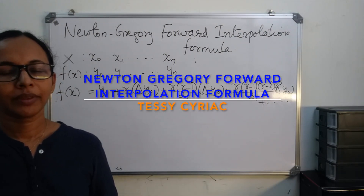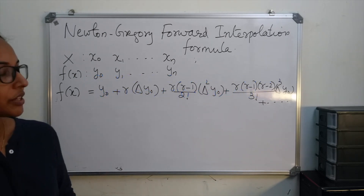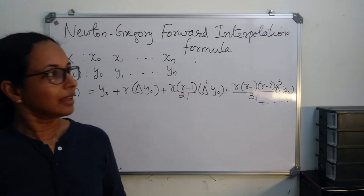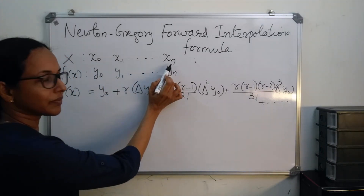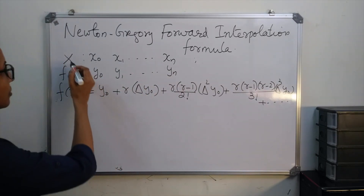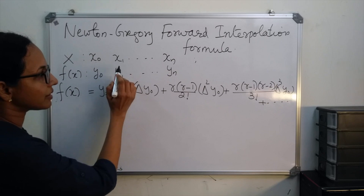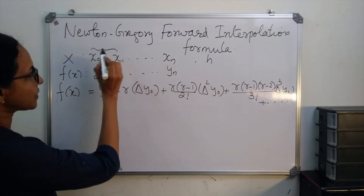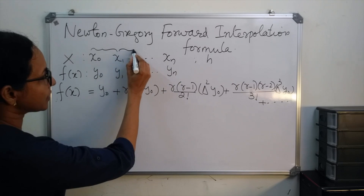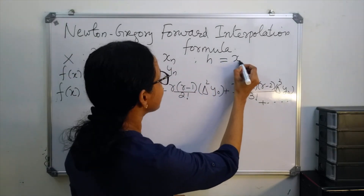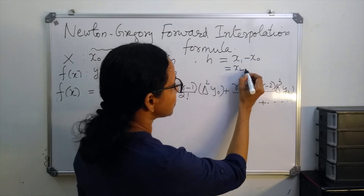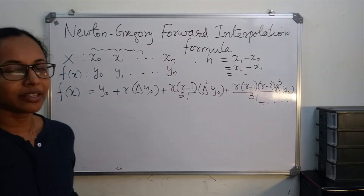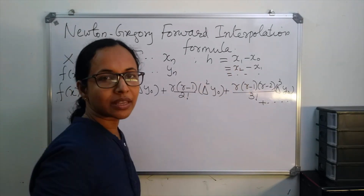Now I will explain the Newton Gregory forward interpolation formula for finding the value of f at a desired value of x. Let x0, x1, x2, ..., xn be the values of a variable x where the x values are equally spaced with step length h. That means the difference between x0 and x1 is h, x2 minus x1 is h, and so on. So h equals x1 minus x0, which equals x2 minus x1. You can apply Newton Gregory forward interpolation formula only if the x values are equally spaced.